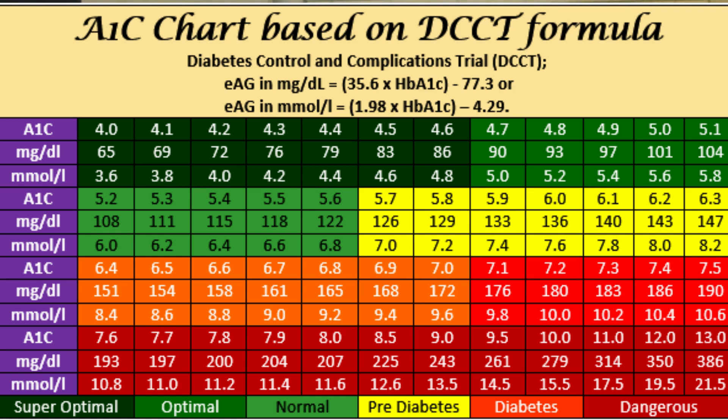An A1c below 5.7% is considered normal. An A1c between 5.7% and around 6.3–6.4% signals pre-diabetes. Type 2 diabetes is diagnosed when the A1c is over 6.4–6.5%. Your A1c goal will be specific to you and your doctor, with factors such as your age, how advanced the diabetes is, and other health conditions. A common goal for people with diabetes is generally less than 7%, though some doctors see 7–8% as reasonable for most type 2 patients, while others want much tighter control through lifestyle and diet changes.